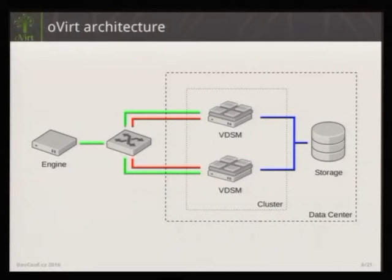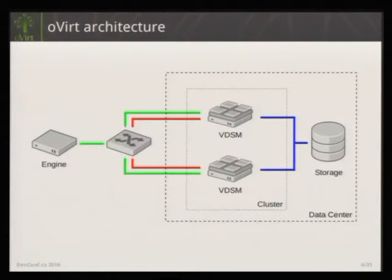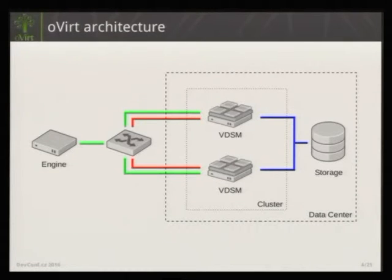A host can have network connections: the green one is the typical network connection you want, and the red one is usually the power management interface of the host. This is an interface that allows you to, for example, stop and start your host using power management actions — not by doing SSH to the machine and executing shutdown, but really turning off the electricity to your host and shutting it down.